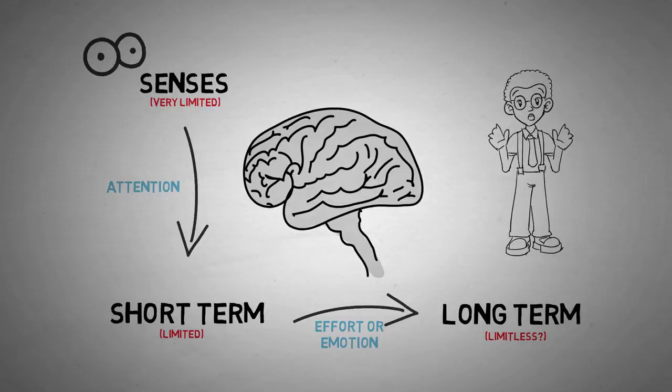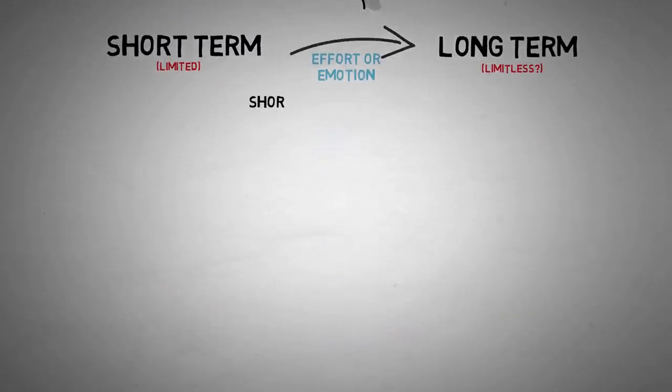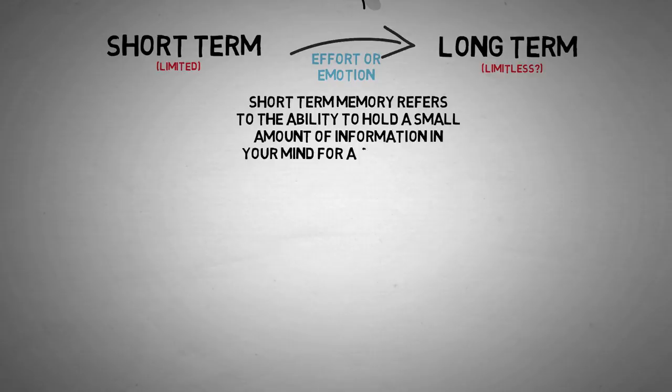Secondly, let's get to the technical definition. Short-term memory refers to the ability to hold a small amount of information in your mind for a short period of time. Now, there are two important qualities of short-term memory: you can't manipulate the information, unlike working memory, which I'll talk about in another video, and it has a very limited duration.